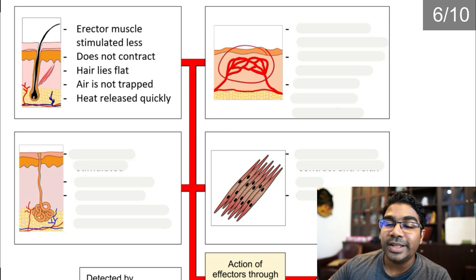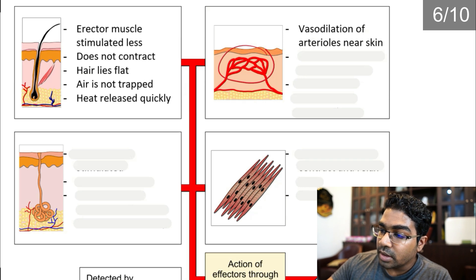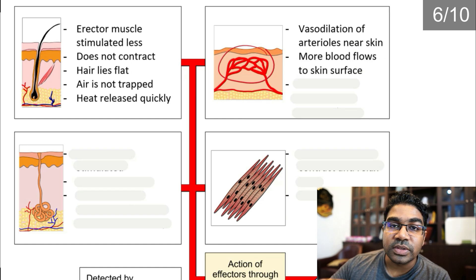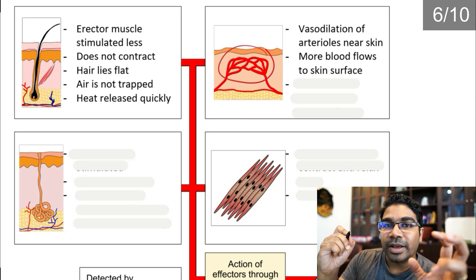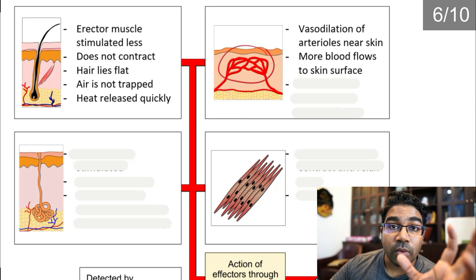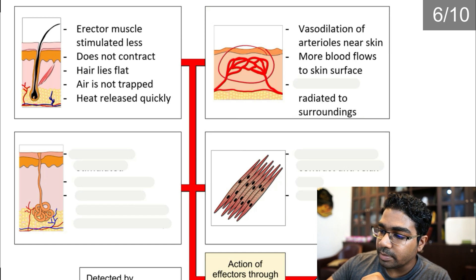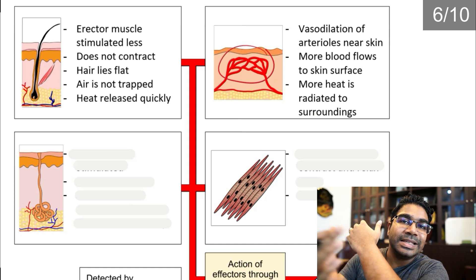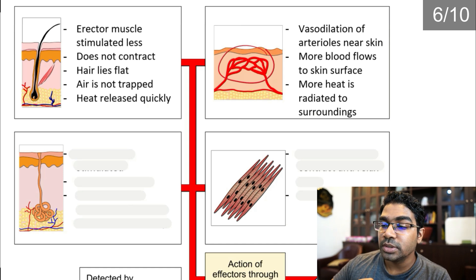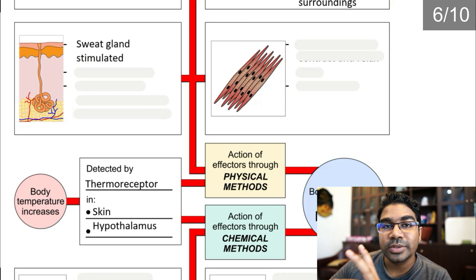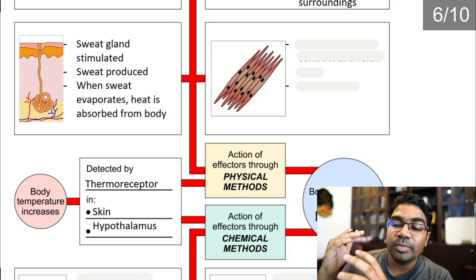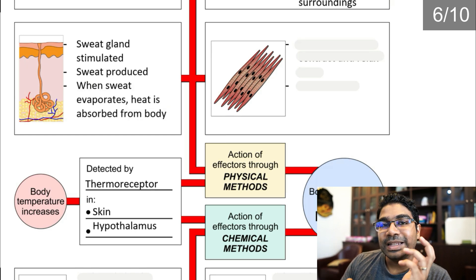Vasodilation occurs in the arterioles near the skin, so more blood flows to the skin surface. Since blood contains most of the body's heat and has a high specific heat capacity, more heat is radiated to the surroundings. Additionally, the sweat gland is stimulated and sweat is produced. When sweat evaporates from the skin, heat is absorbed.